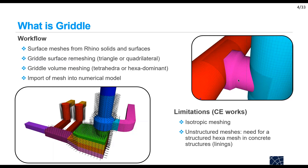That means you will end up with a very high number of model elements. Another disadvantage is that being an unstructured mesher, you will also have tetrahedral elements in the lining, and tetrahedra are not the best elements for modeling plasticity. You will prefer to have only hexahedral elements.